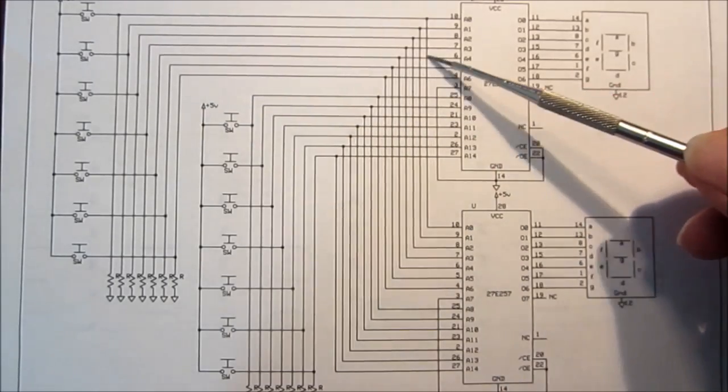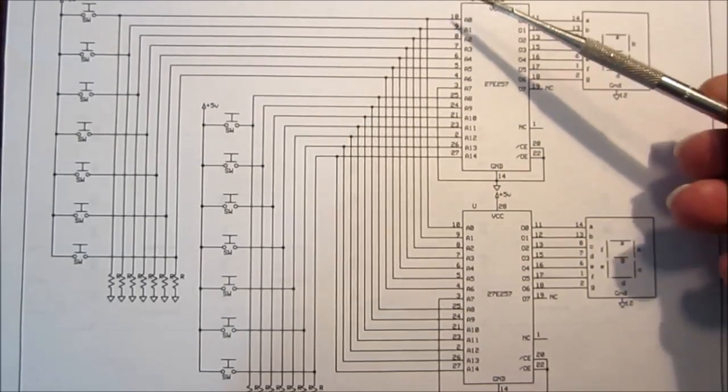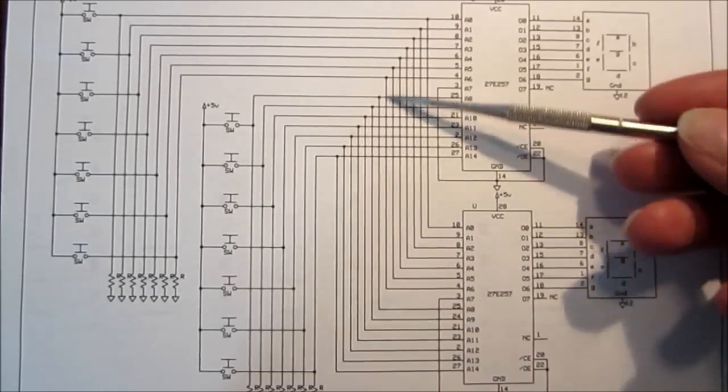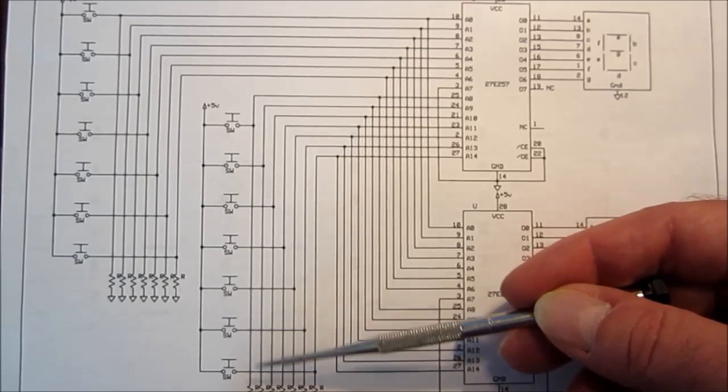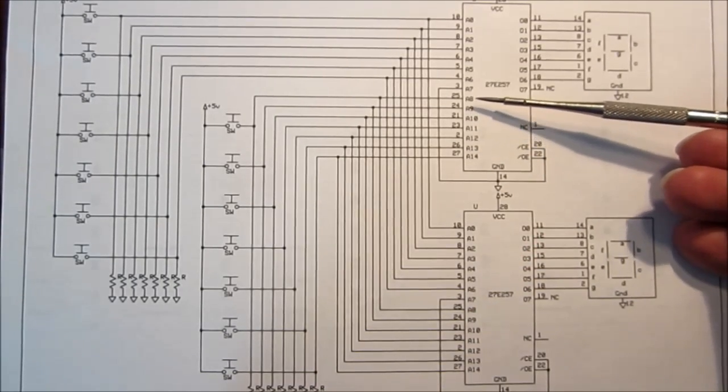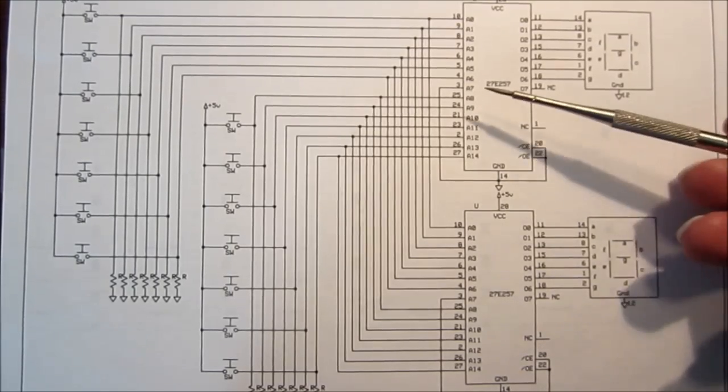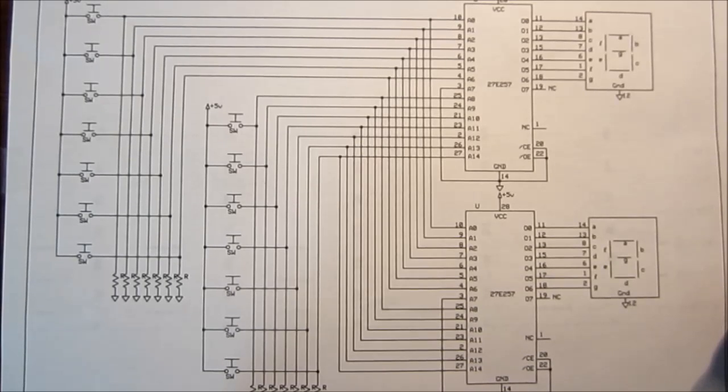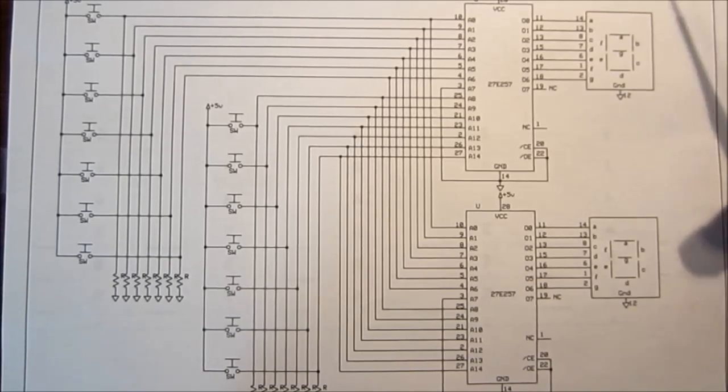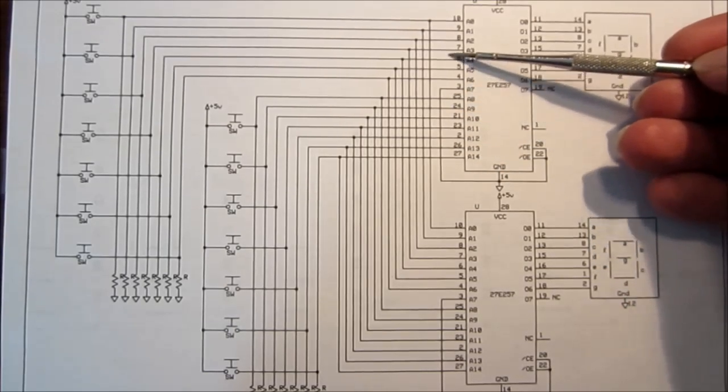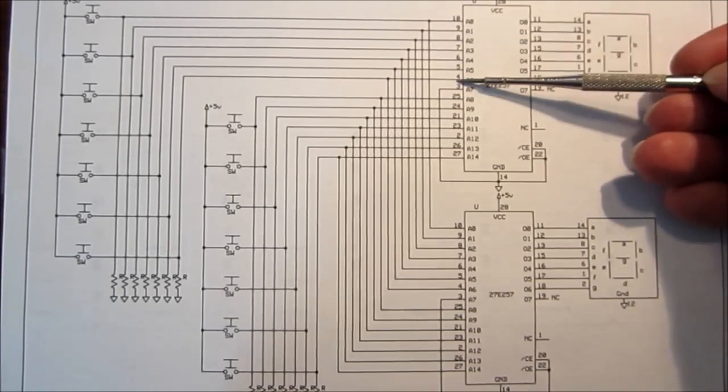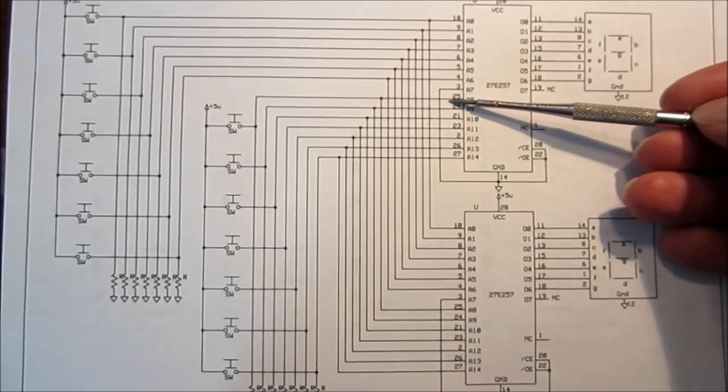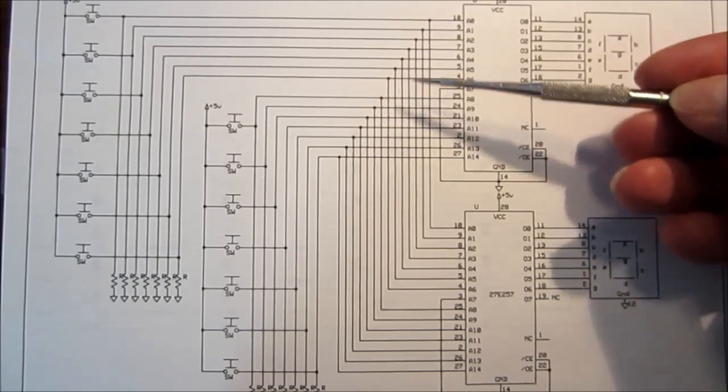This set of 7 switches goes to the lower address bits. It goes through A0 to A6 on both chips. They're in parallel. And then this set of 7 switches goes to the address bits A8 through A14. So these chips are 32K chips. They have 15 address lines, A0 through A15.